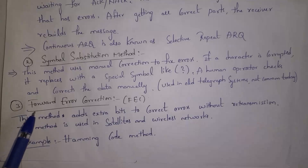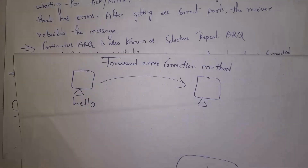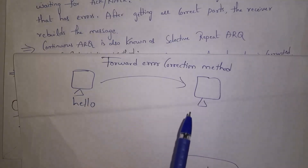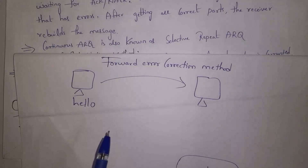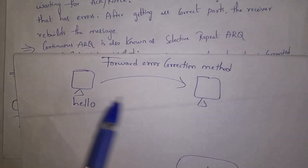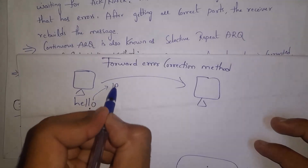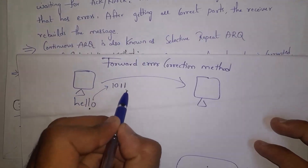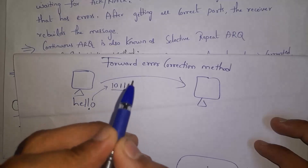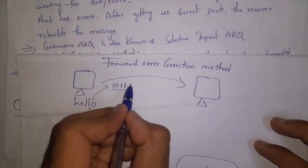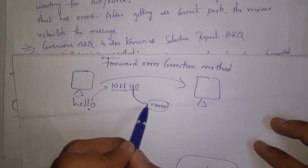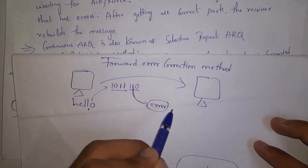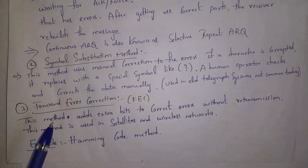The third method is Forward Error Correction. In this method, along with our data, we add extra bits. By using those extra bits, we can detect and correct errors in the data. For example, along with the binary bits of 'hello', the forward error correction method adds some extra bits like '1 1 0'. These extra bits are used to check and correct errors. Forward error correction is used in satellites and wireless networks.